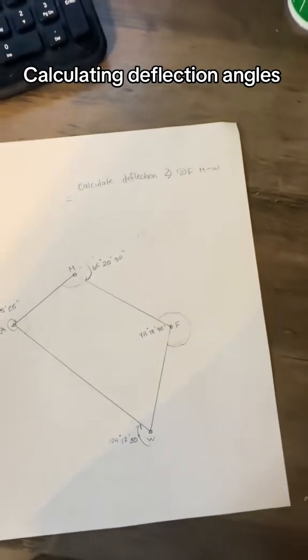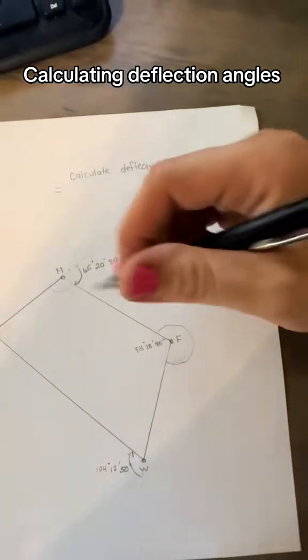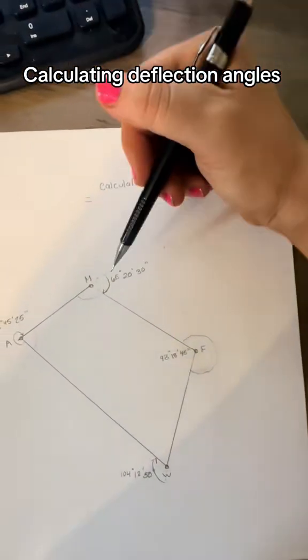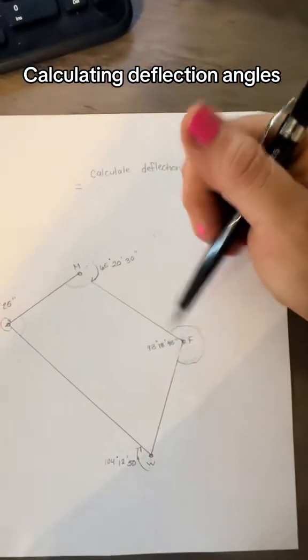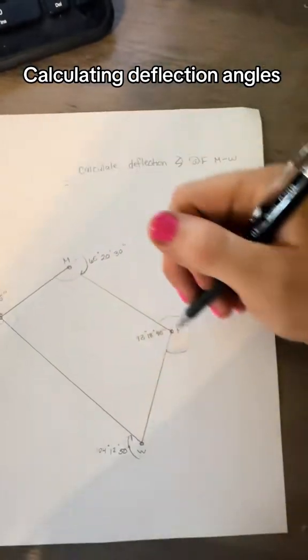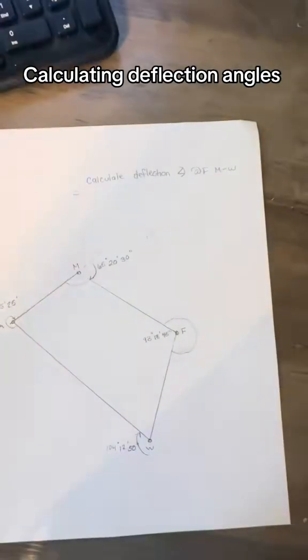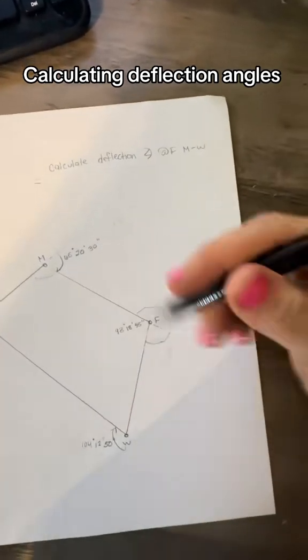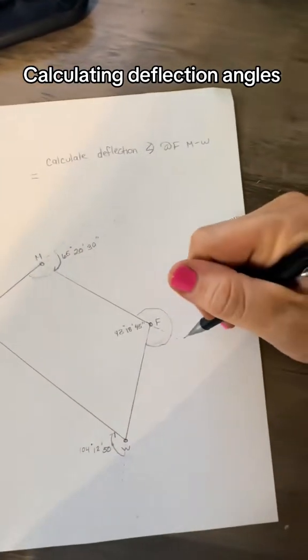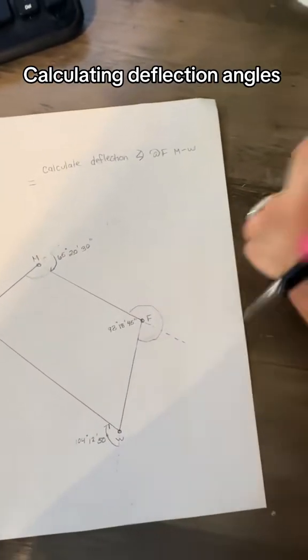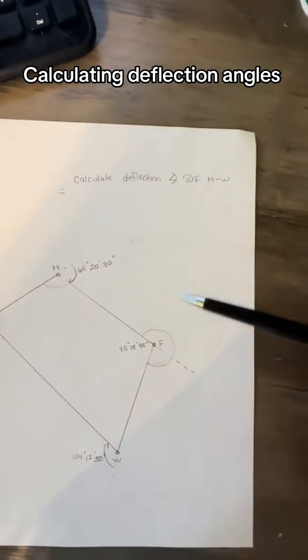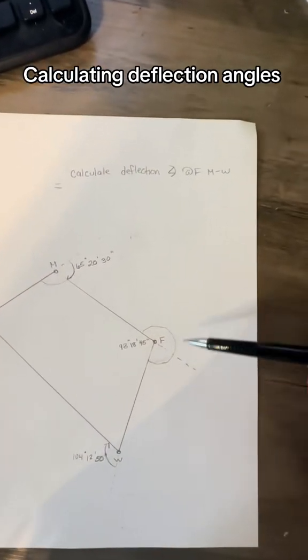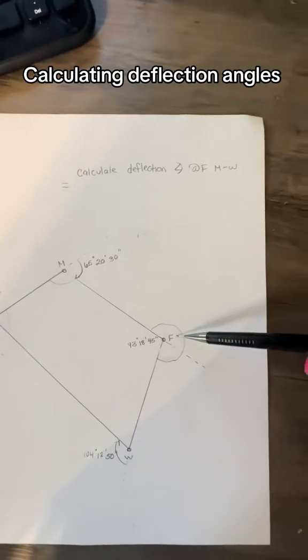We want the deflection angle. So the best way to visualize this is to think about your line of sight from the back sight. So let's say it's just going to extend straight out from F. Now, if you draw this, drawing things can be really helpful. Draw this like this.